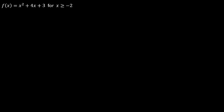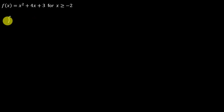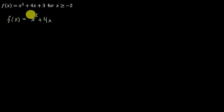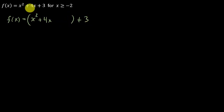Before we can find the inverse, we're going to have to take this quadratic function and put it in vertex form. So I've got f of x equals x squared plus 4x, and I'm going to group the x squared and the 4x together in parentheses and leave the 3 out here.